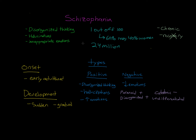So there we go. We've talked about the symptoms of schizophrenia, how often it appears in the population, how it begins and can develop, the different types and subtypes of the disorder, and how it can affect the lives of those diagnosed with it.